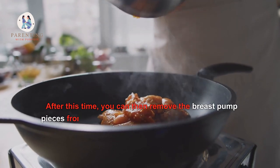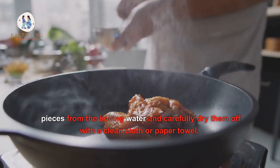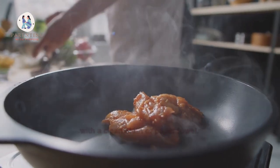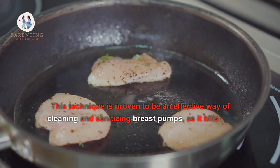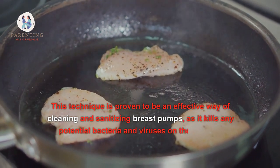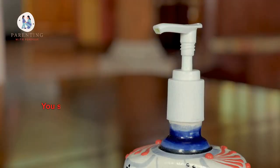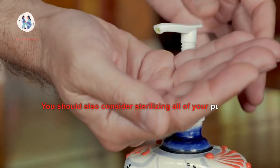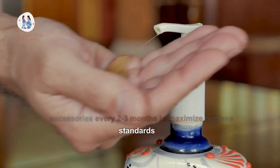After this time, you can then remove the breast pump pieces from the boiling water and carefully dry them off with a clean cloth or paper towel. This technique is proven to be an effective way of cleaning and sanitizing breast pumps, as it kills any potential bacteria and viruses on the surface. You should also consider sterilizing all of your pumping accessories every 2 to 3 months to maximize hygiene standards.